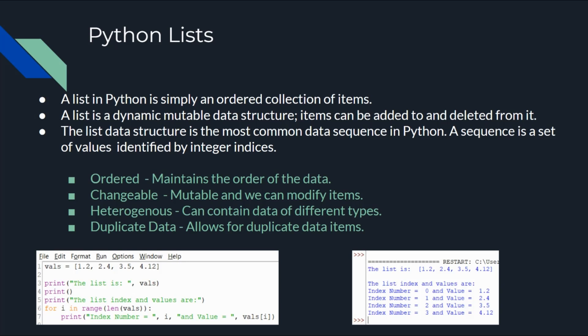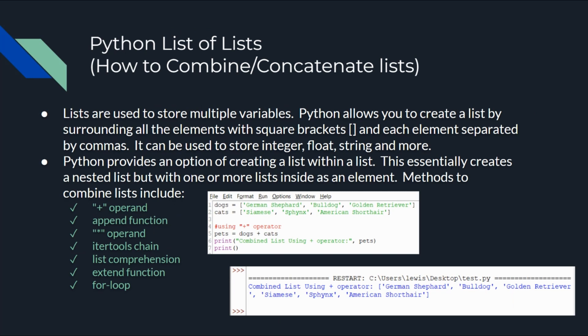A sequence is a set of values identified by integer indices. An individual item in the list can be referenced by using an index, which is an integer number that indicates the relative position of the item in the list. Lists of lists are also known as nested lists — a list can contain other lists. Multi-dimensional arrays can be defined with nested lists. To create a list of lists in Python, you can use square brackets to store all the inner lists. A list of lists is essentially combining multiple lists into one.